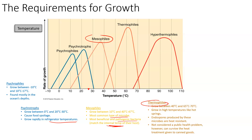Thermophiles are in the upper end of the temperature range, growing between 40 and about 70 degrees Celsius. Body temperature is right around 37 degrees and boiling is 100 degrees, so thermophiles are past body temperature and won't grow in a host at all — their optimum is around 60 degrees and their minimum is about 40 degrees, which is above our internal temperature. They grow in high temperatures like hot springs, and they are able to withstand high temperatures because they produce endospores.